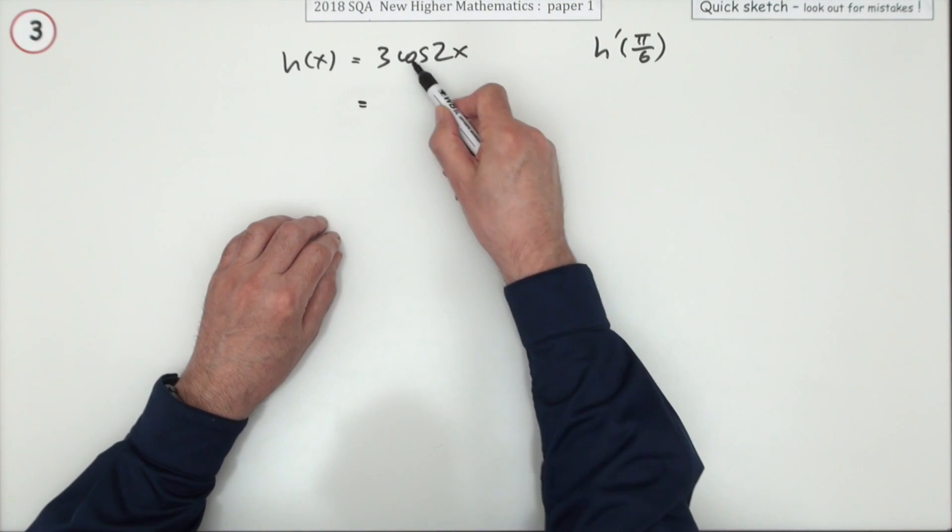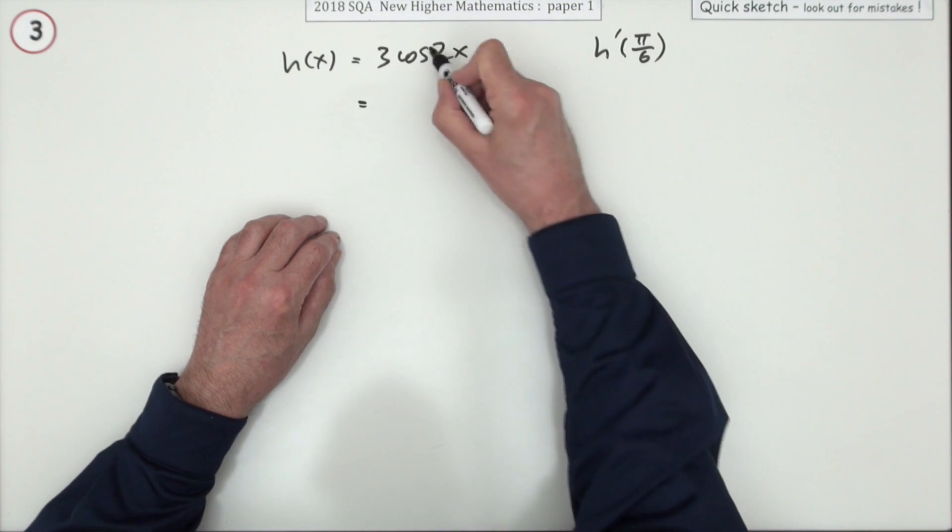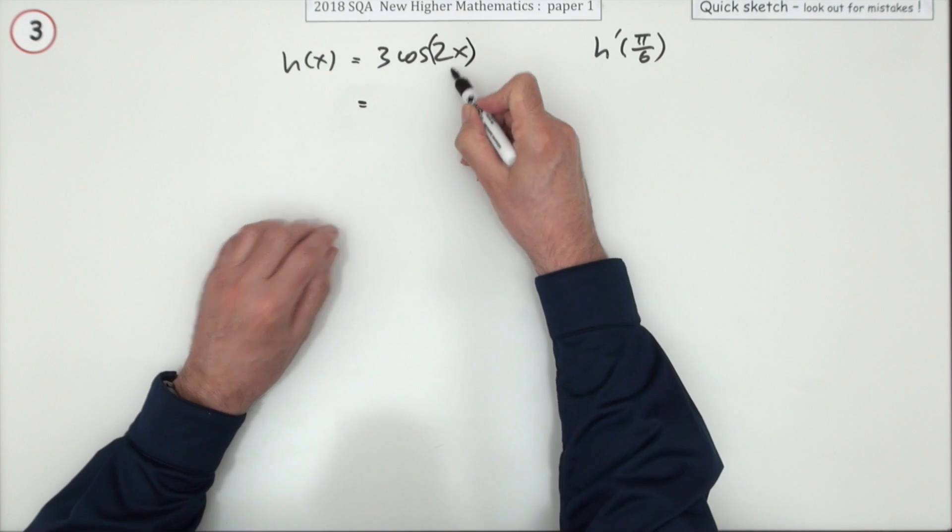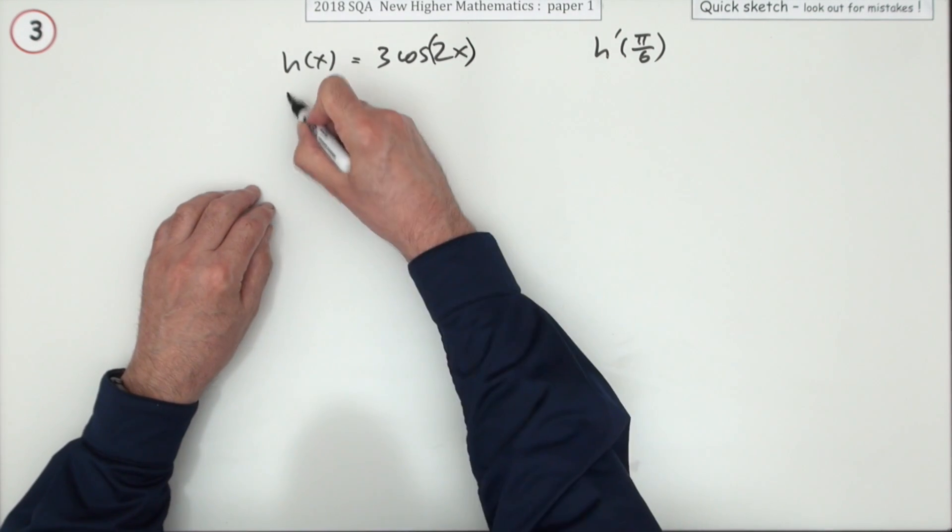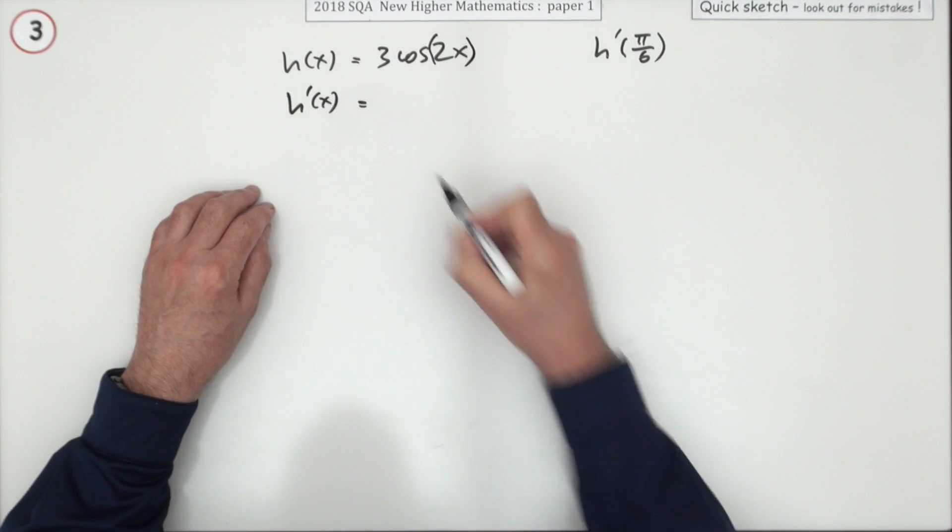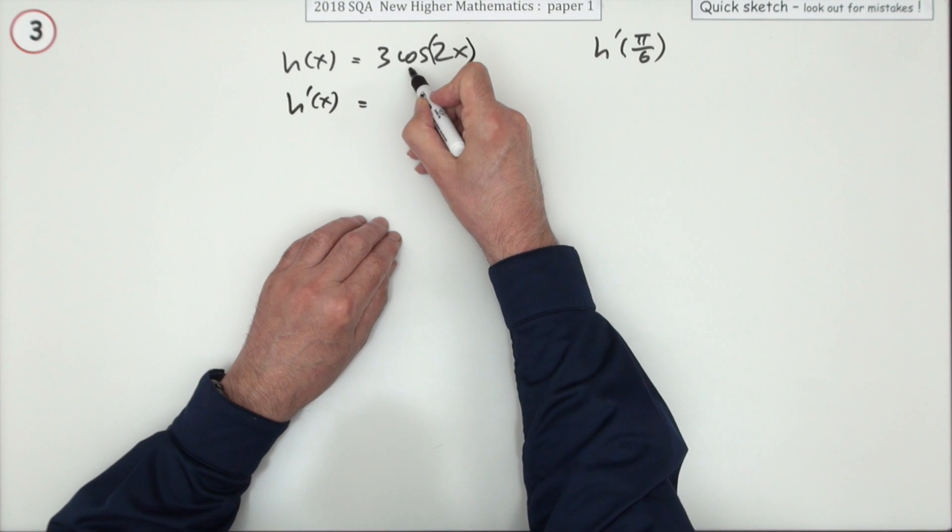Now the first thing to notice here is that's not just cos(x), that's cos(2x). You've got a function of a function, there'll be a chain rule here. So when you differentiate it, the cos will go to negative sine.